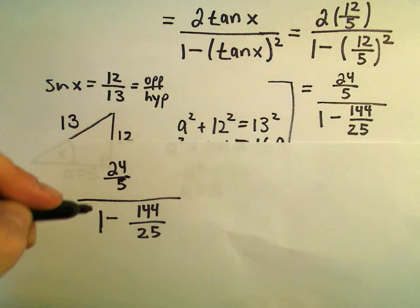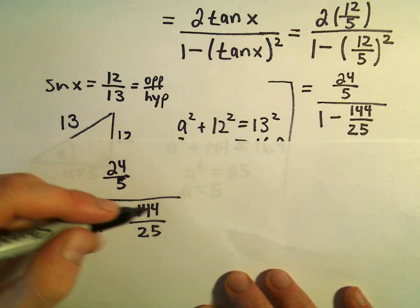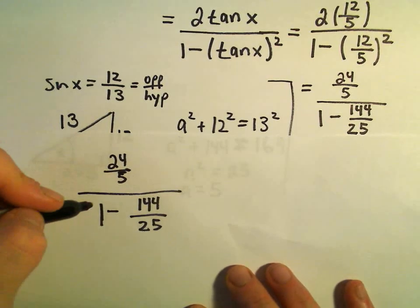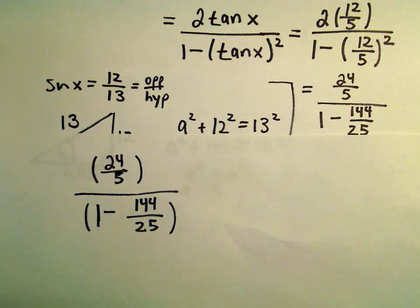And there's a couple of different things. You could get common denominators in the denominator, write it as a single fraction, flip and multiply. What I'm going to do to get rid of the fractions is just multiply by the least common multiple of the denominators.